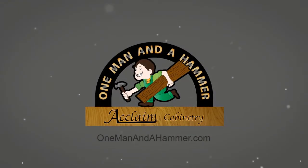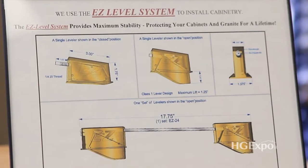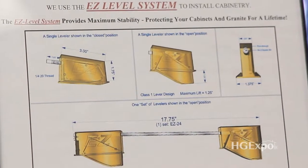One of the added value items we do for all of our clients is we use a system called the easy level system. It's four adjustable metal feet for each cabinet.